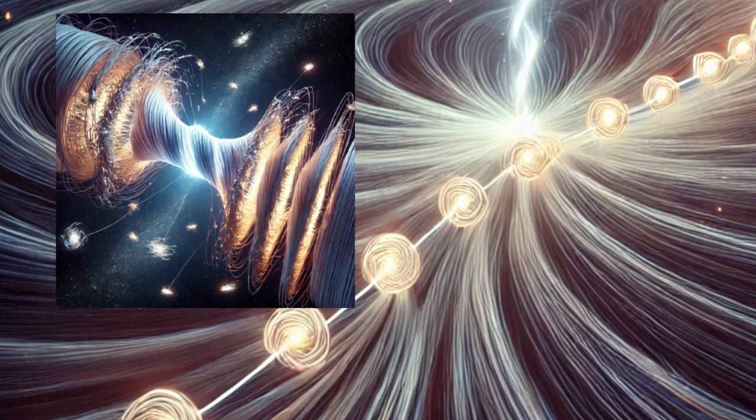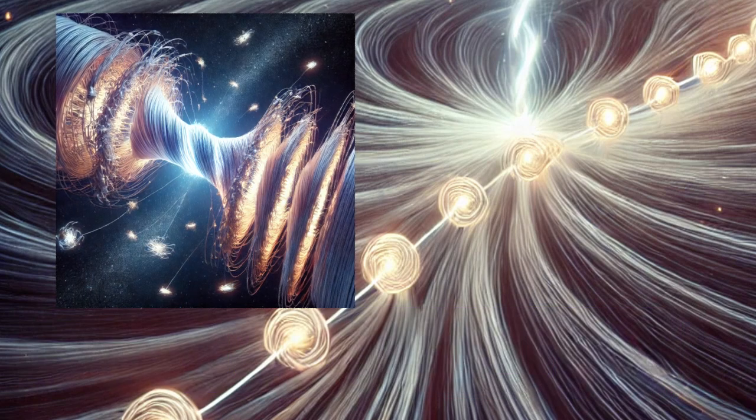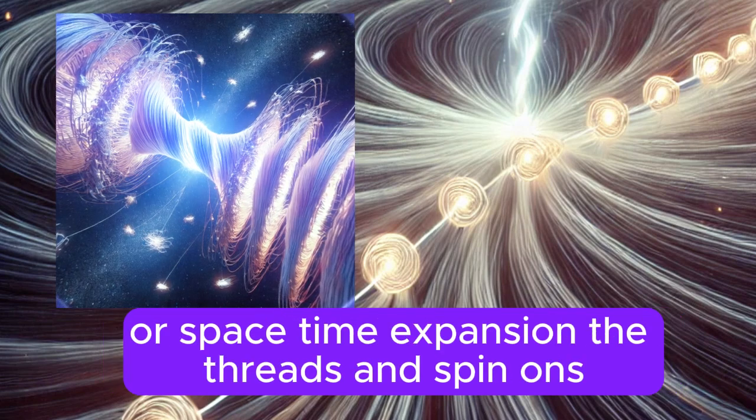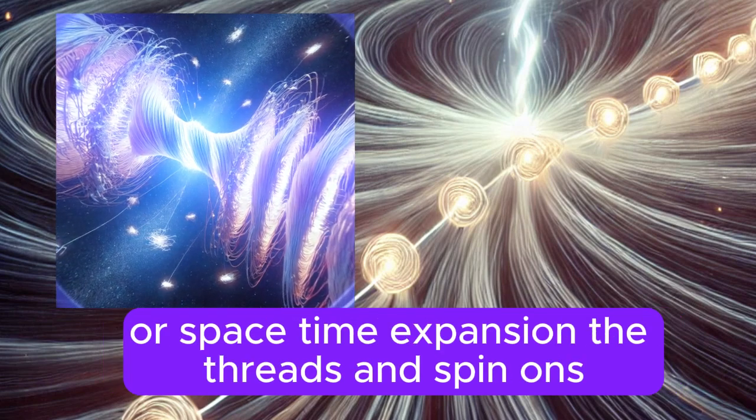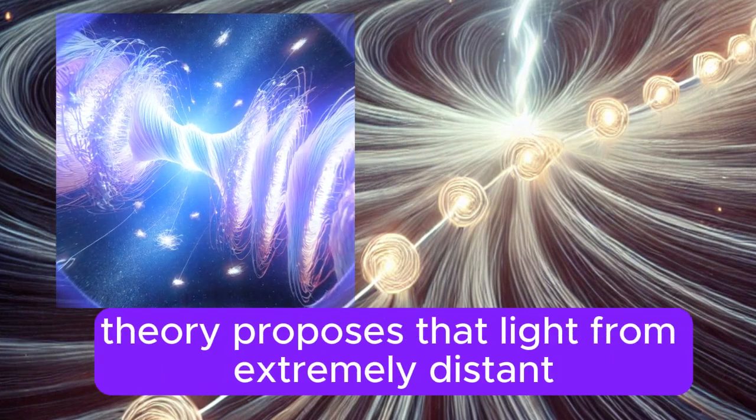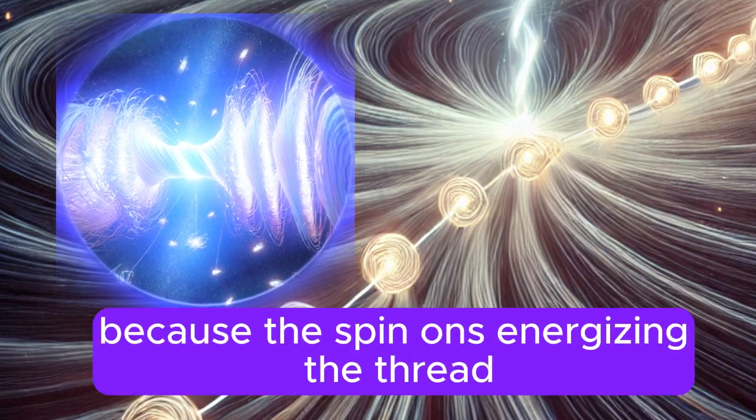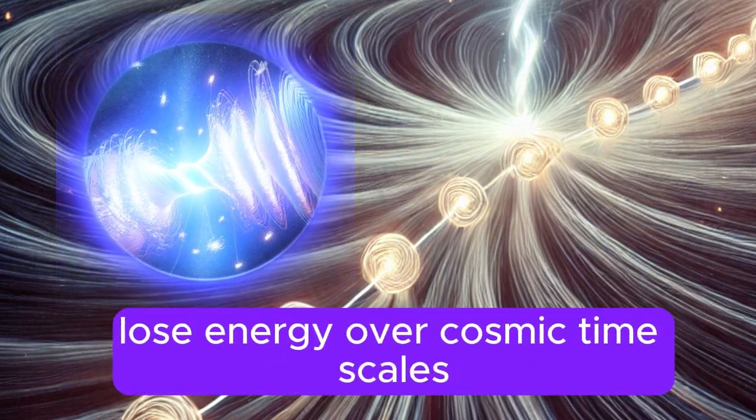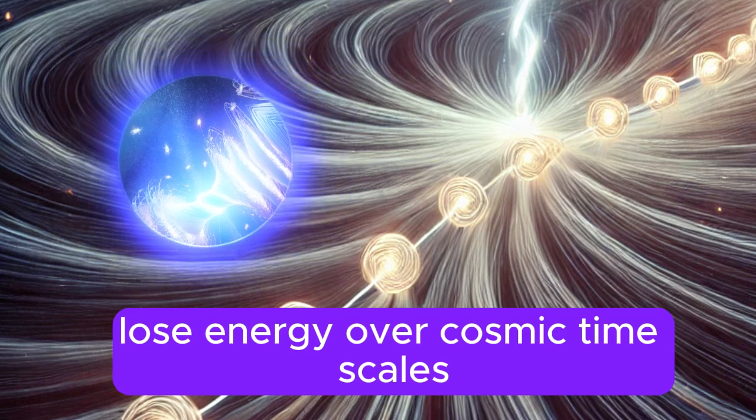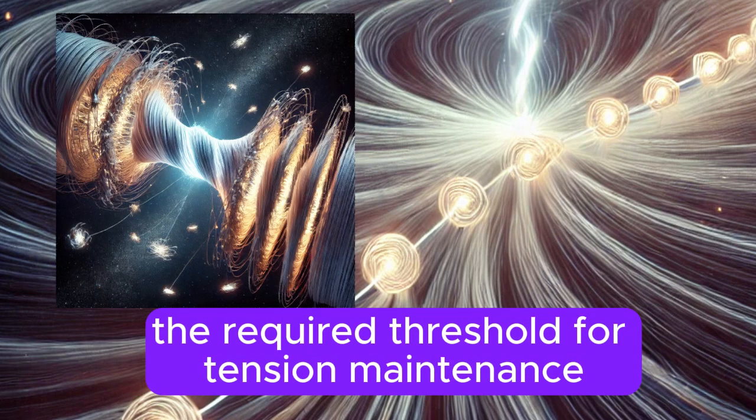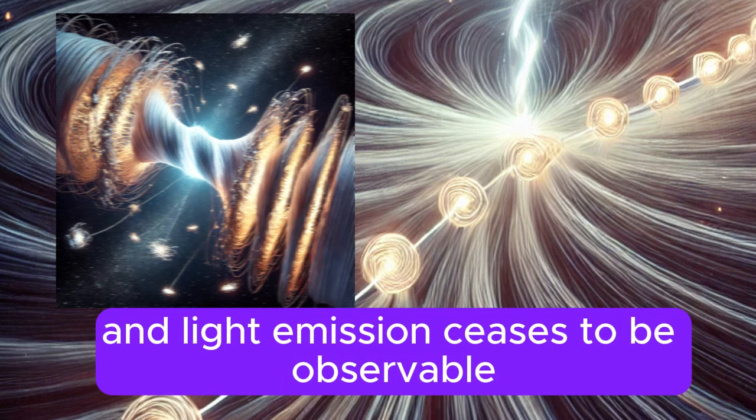Why distant objects become invisible: Energy depletion. Unlike the traditional view where light visibility fades due to redshift or space-time expansion, the threads and spin-ons theory proposes that light from extremely distant objects becomes invisible because the spin-ons energizing the thread lose energy over cosmic time scales. When the SEU diminishes below the required threshold for tension maintenance, the thread collapses and light emission ceases to be observable.